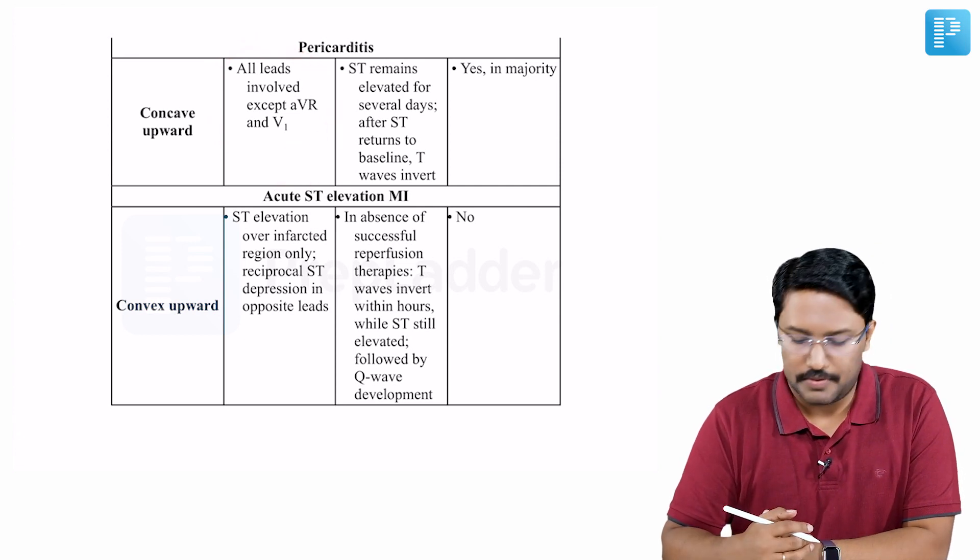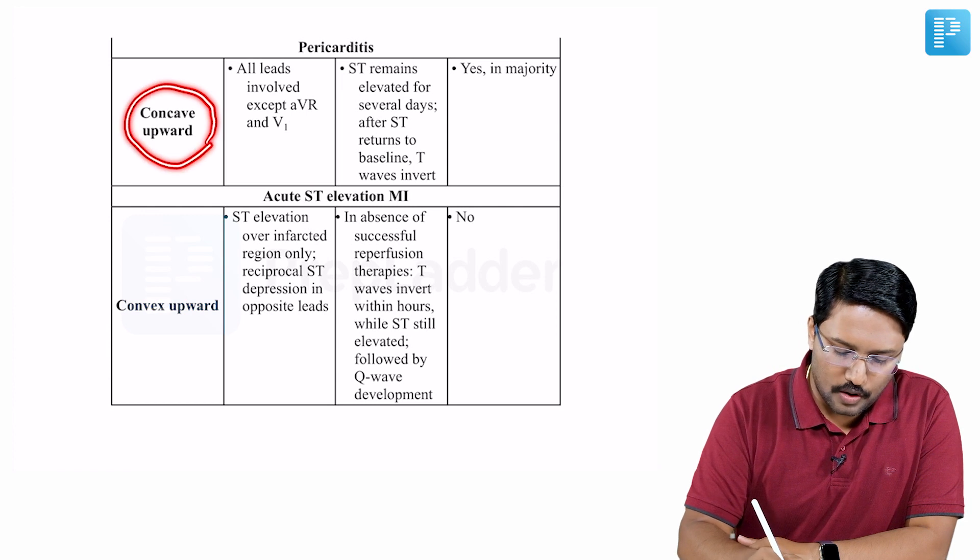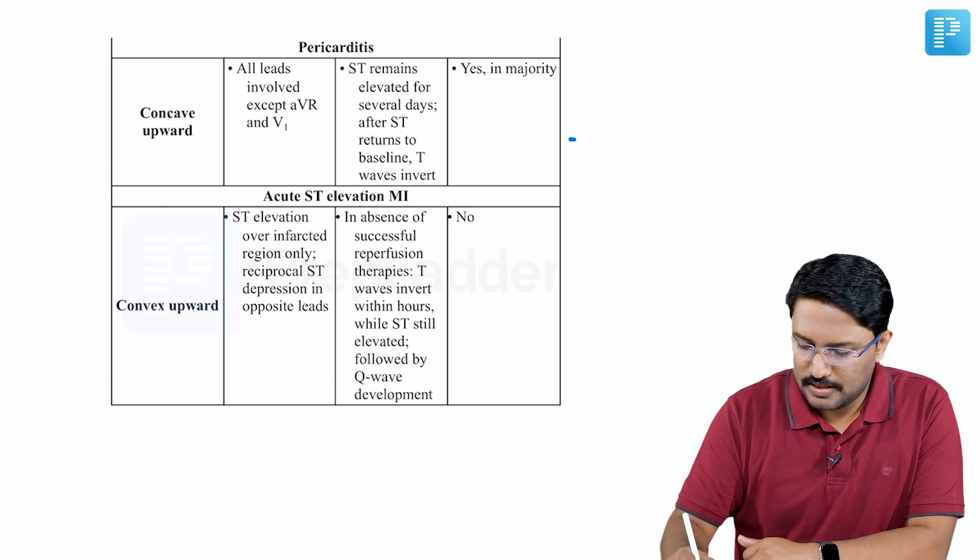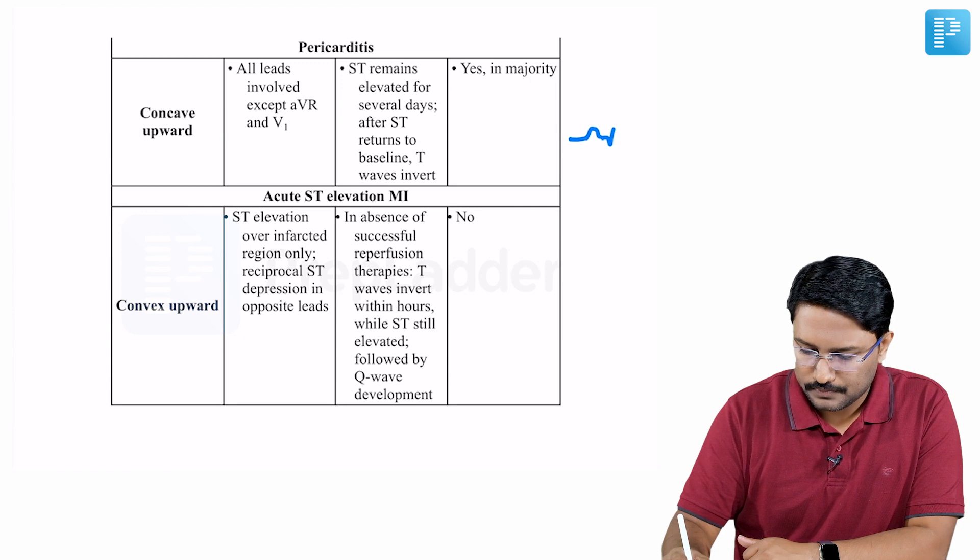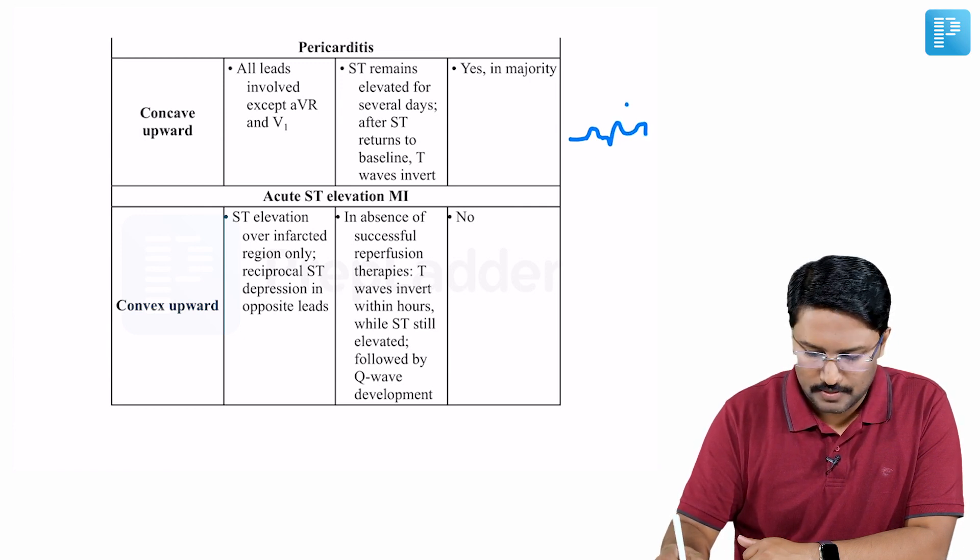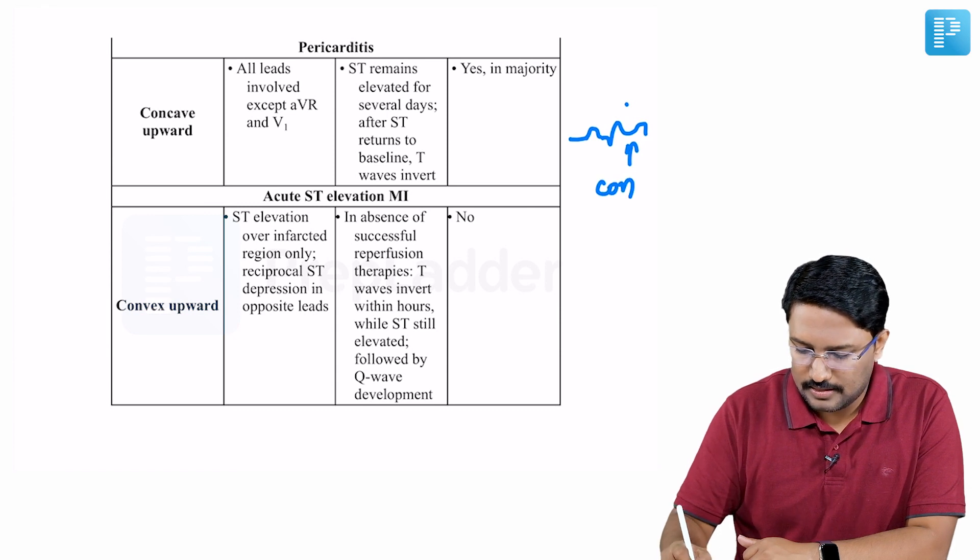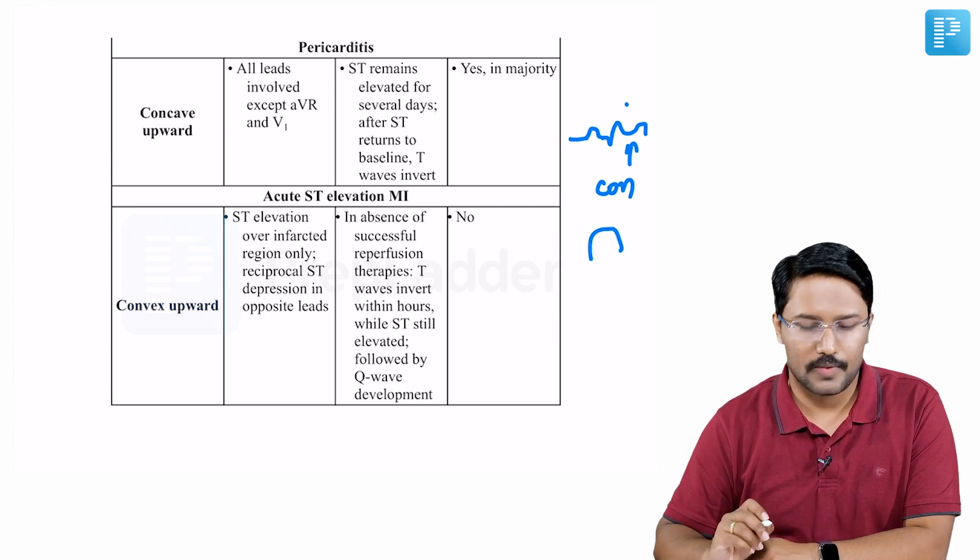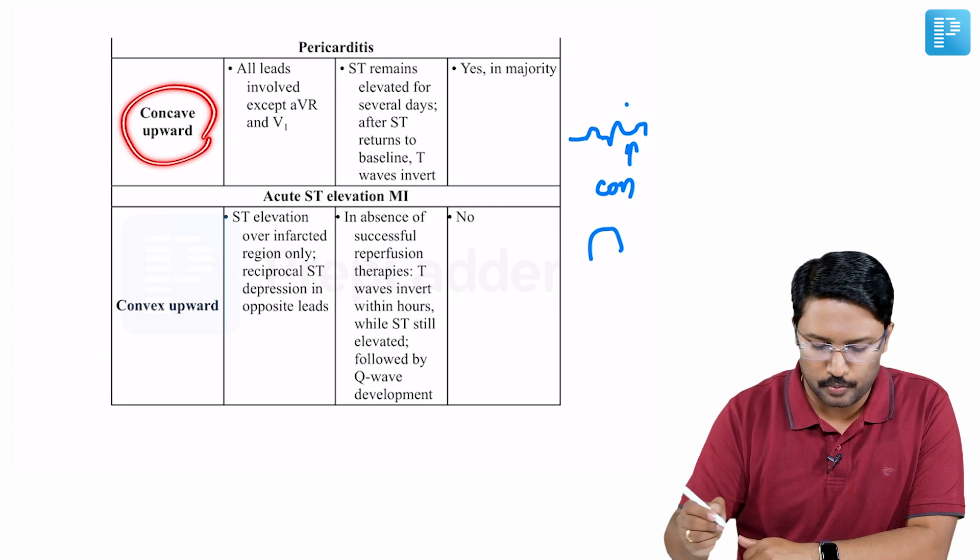The nature of this ST elevation is more likely to be concave upwards. The ST elevation might look like this, more concave rather than convex like this. You'll be seeing a concave upward ST elevation.